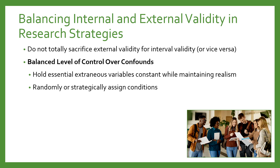You could also randomly or strategically assign research participants to conditions so that pre-existing individual differences are evenly distributed across conditions, instead of relying on comparing pre-existing groups in a quasi-experiment. For example, you could randomly assign first-year non-transfer online students to receive either a belongingness intervention or a study skills intervention — not letting them choose, not relying on pre-existing groups, but randomly assigning them.